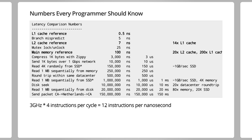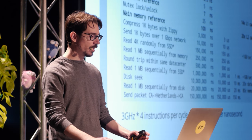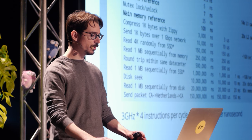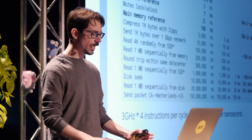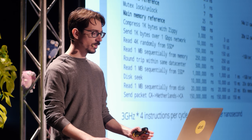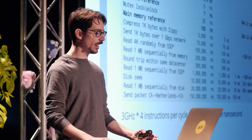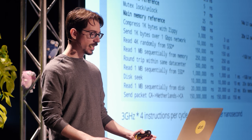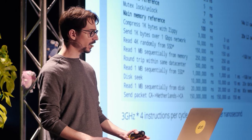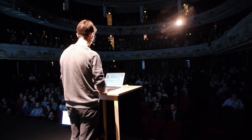So an order of magnitude bigger, but an order of magnitude slower. My laptop has two 32-kilobyte L1 caches, two 256-kilobyte L2 caches, three megabytes of L3 cache, and 16 gigabytes of main memory.